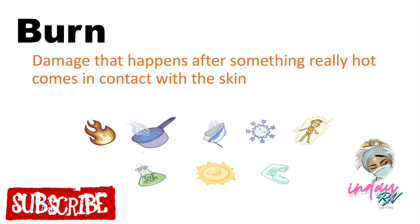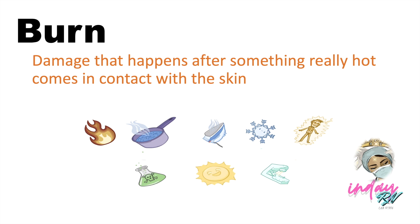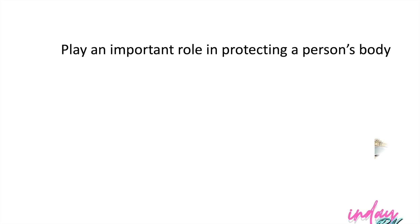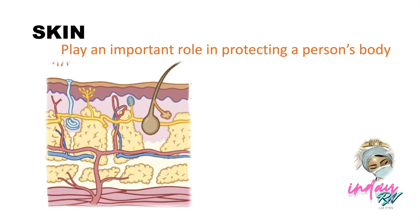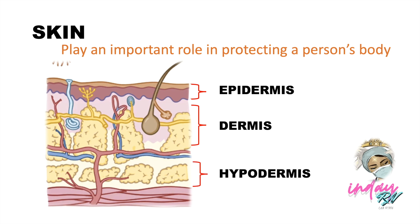Burns cause damage and inflammation of the skin. The skin plays an important role in protecting underlying muscles, bones, ligaments, and internal organs, forming a barrier to infectious pathogens and preventing water loss from the body. The skin is divided into three layers: the epidermis, the dermis, and the hypodermis.